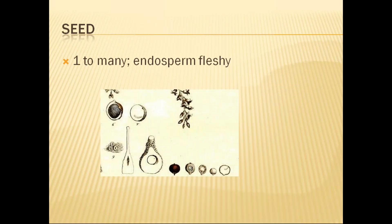The seed is one to many, and the endosperm is fleshy — they are embedded into fleshy endosperm. The cross section and longitudinal section of the ovary show how the seeds are embedded into the fleshy endosperm, which is clearly seen in the photograph. One to many seeds are present in this family.